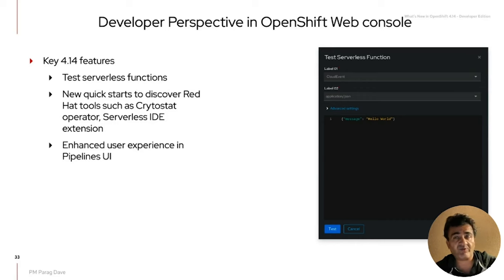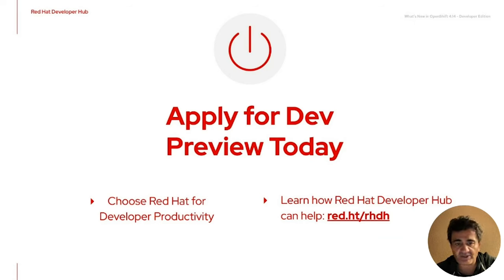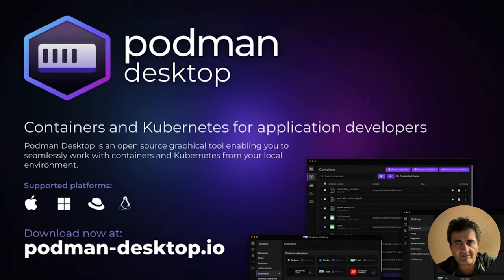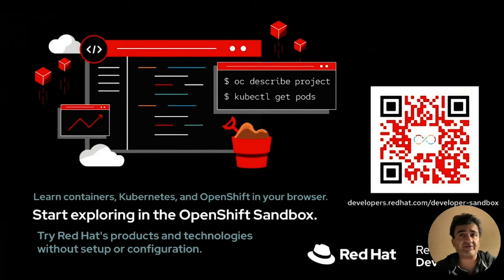There are more exciting features coming in 4.15 which we'll talk about later. To conclude, we hope you're excited about all these new enhancements delivered for OpenShift 4.14 across the developer portfolio. For Developer Hub, if you want to take a look at the dev preview today, go to the link here to apply — once approved, you can download the image and run it on your own cluster of choice. Podman Desktop is a very popular open source project for creating containers and running Kubernetes directly from your desktop. Go to the link below to download it. Developer Sandbox is always on, free to use, no setup required — just click the button, get signed up immediately, get access to a live OpenShift cluster with a private environment, enough resources, and pre-configured developer tools without having to install or pay for OpenShift.